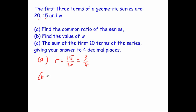Part B is to find the value of W. So to find W, you just need to times 15 by 3 quarters. So 15 times 3 quarters, that's 45 over 4, and that's equal to 11.25. So that's what W is equal to.